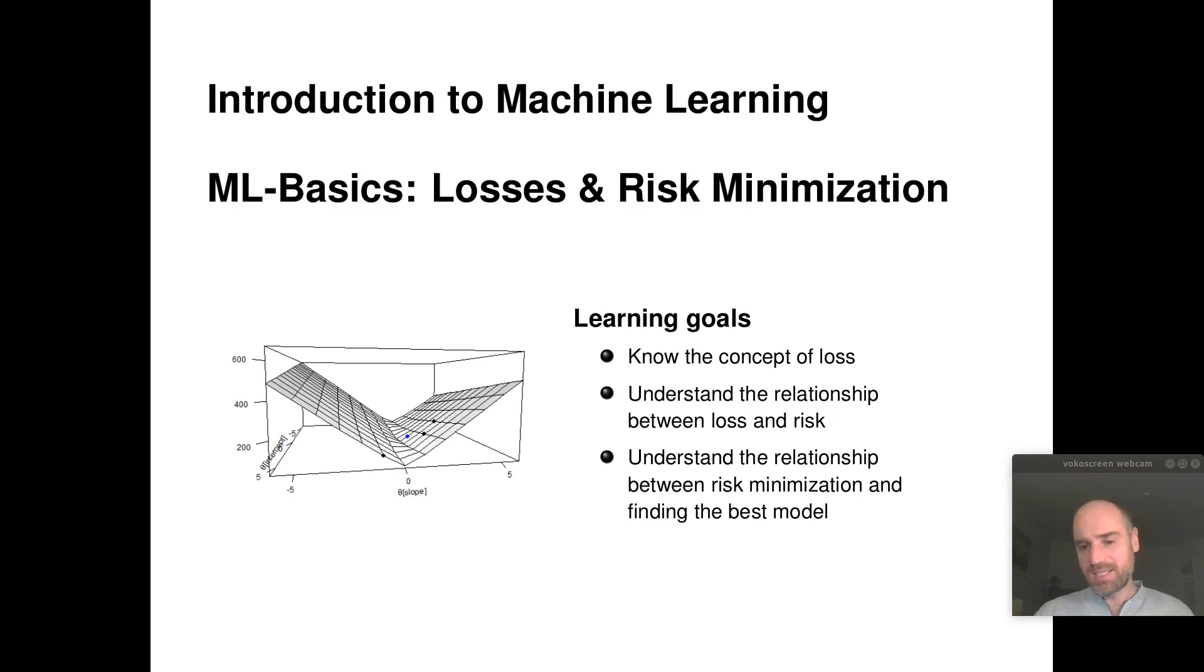We will sum up all these losses for a certain machine learning model over all of our training data, and that will give rise to the so-called risk function. A risk function puts a quality score next to each element from our hypothesis space that encodes how well our element from the hypothesis space matches our training data.